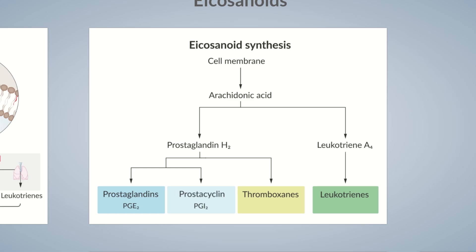The most important compound in the thromboxin family is thromboxin A2, shown here on the right. Leukotriene A4 gives rise to leukotrienes B4 to E4. That completes our summary chart of the eicosanoids.